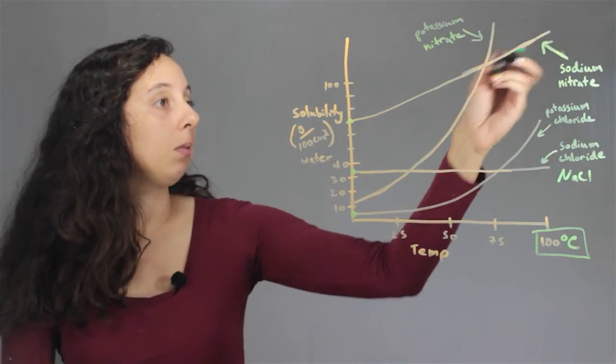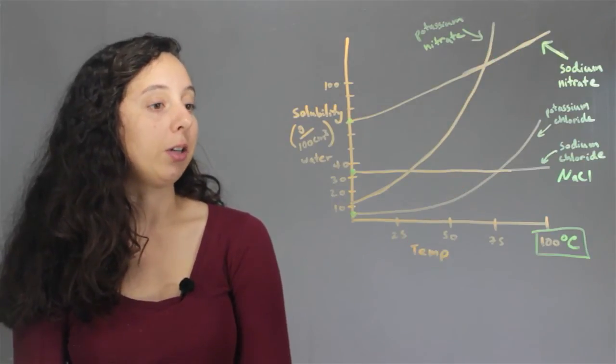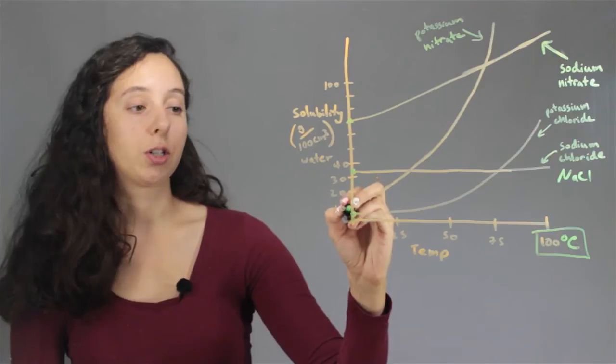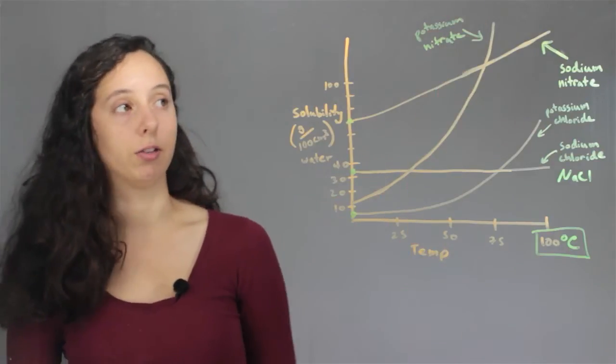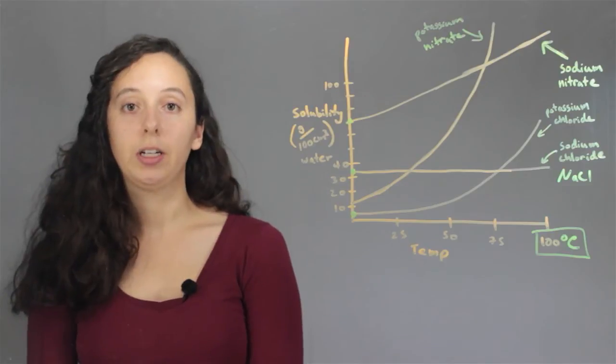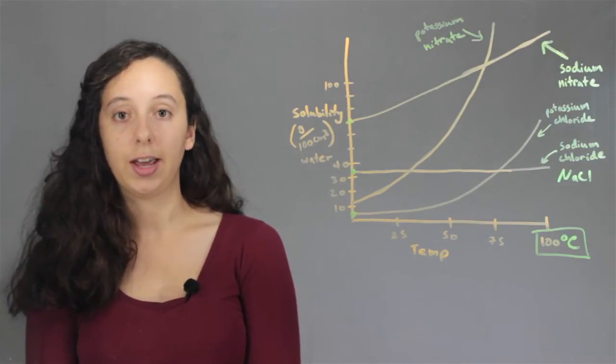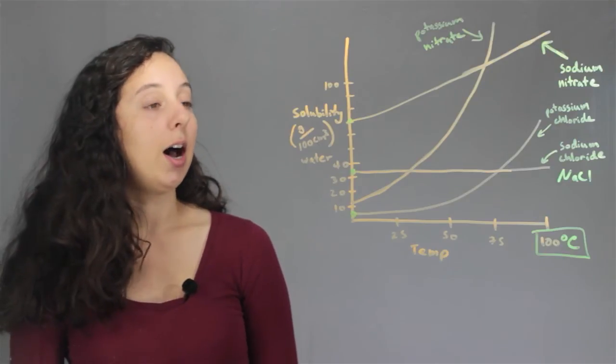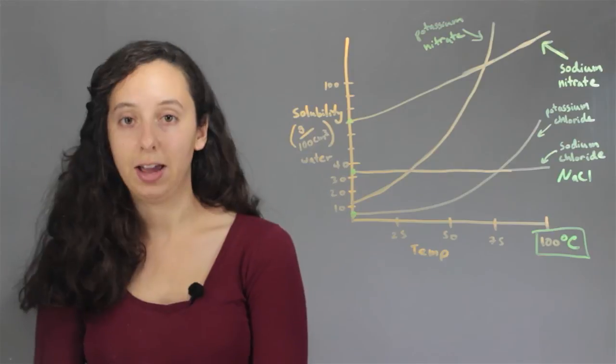But the one that has the hugest curve of all is potassium nitrate, right? It starts here, just a little bit above 10, and it rises pretty quickly to well over 100. So depending on the different intermolecular forces and intramolecular forces that each molecule has, the solubility is really going to range quite dramatically.